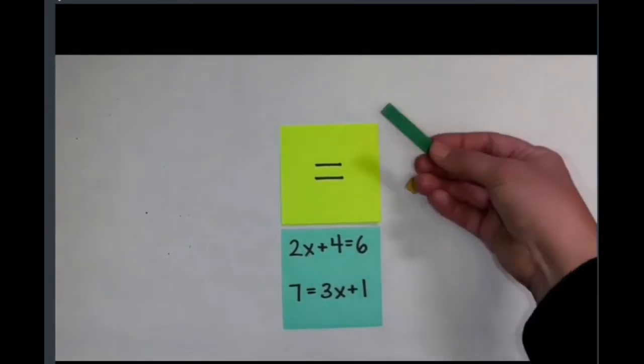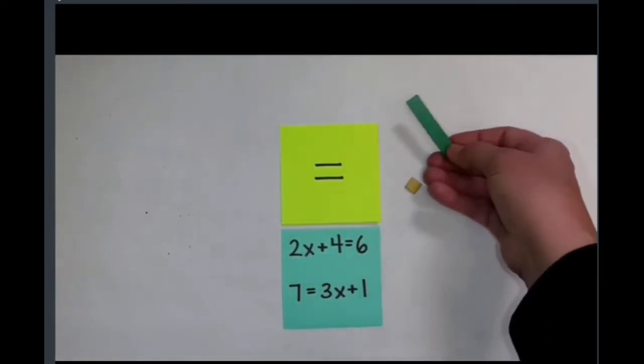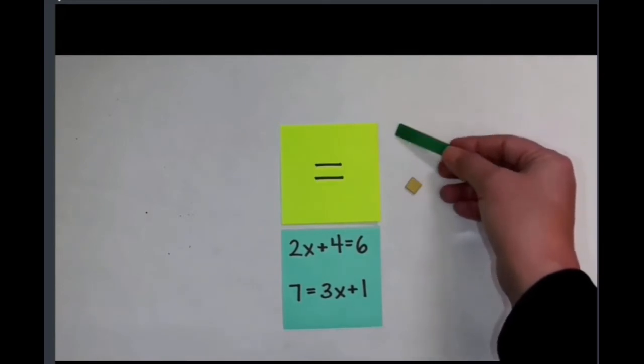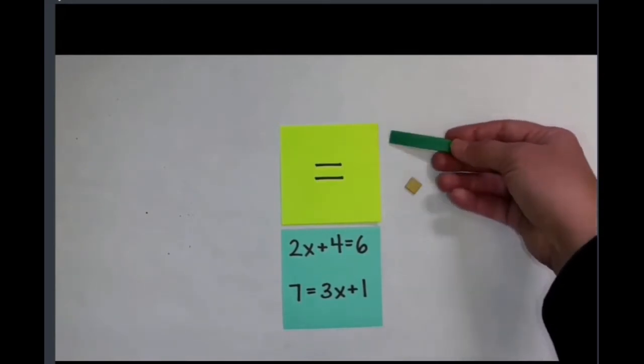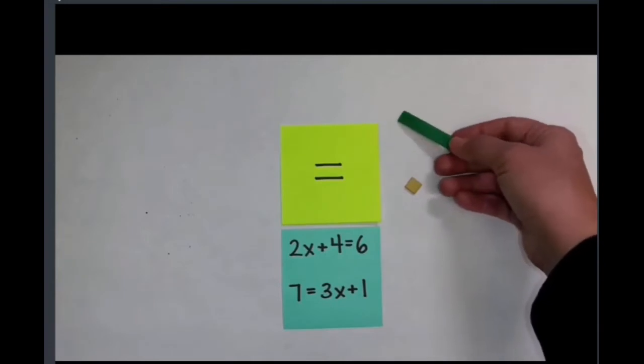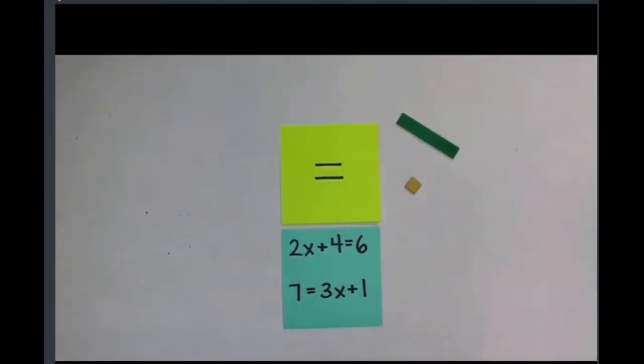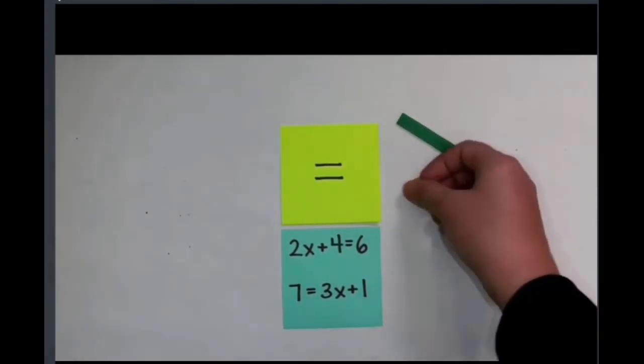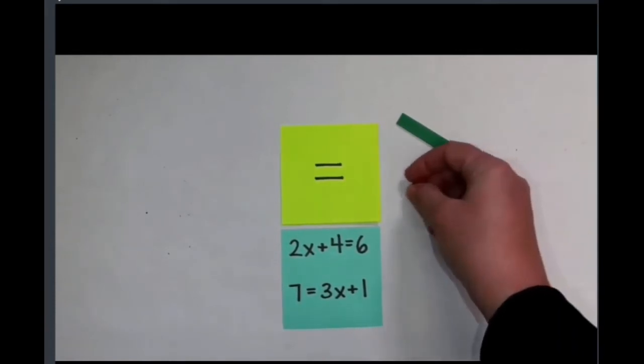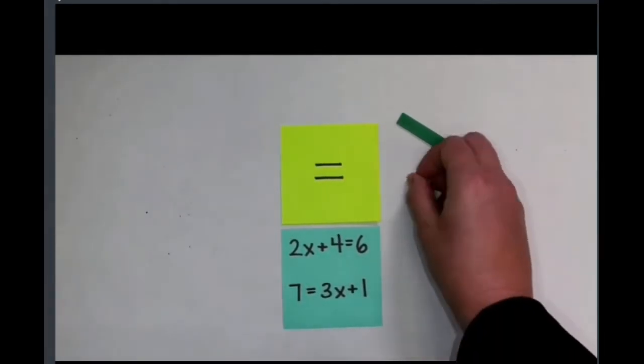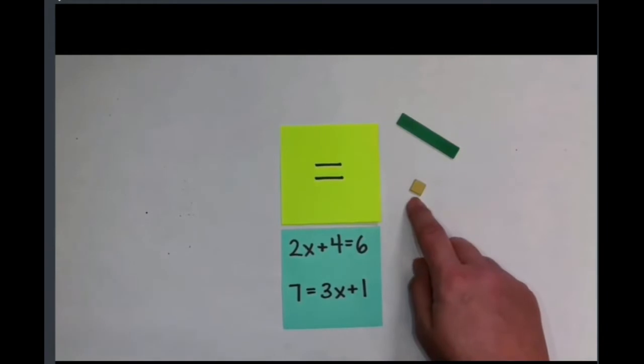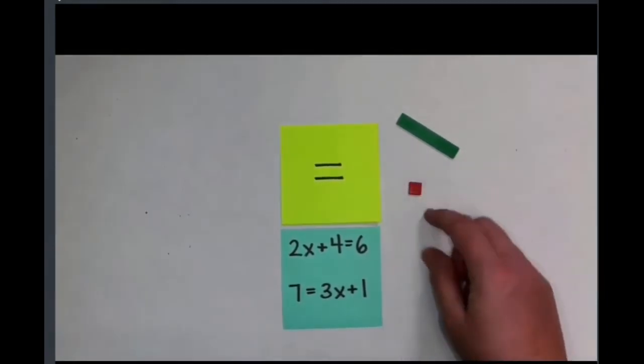The algebra tiles are a pretty neat tool. I can use these rods to represent the variable, they would be used to represent X, and I have a positive side and a negative side. I can flip them over to easily show either positive X or negative X. Then I have these units. Notice there's kind of a light brown side and a red side. These are going to represent my constants, so this is a positive one and this would represent a negative one.